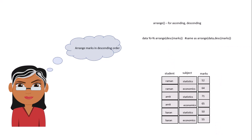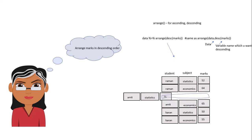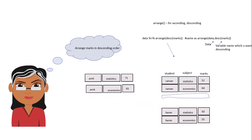Now suppose you want to arrange the data in descending order of the marks value — for that you have the arrange function, which is used for ascending or descending ordering. The syntax is: first give the data frame as an argument, then apply the desc() function on the marks column as the second argument. When you run this, the data is arranged in descending order: 71, 65, 64, 55, 52, 50.